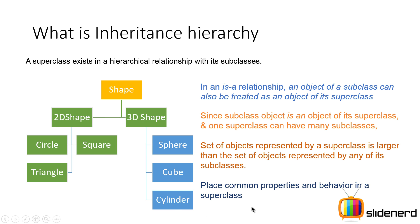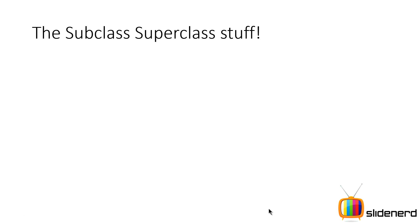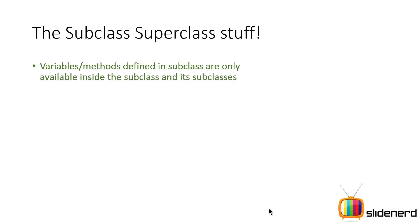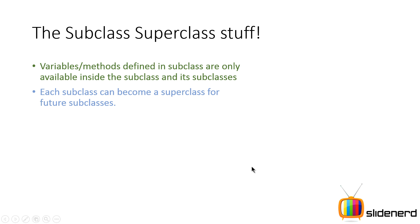Remember: place common properties and behavior inside the superclass and just add the specific ones inside the subclasses. We discussed this in the previous video — if you haven't seen it, please go back and check it out. Also, variables that are new and defined inside your subclass are accessible only inside that class and its subclasses. And remember, each subclass can also become a superclass for other subclasses — it's multilevel, like grandfather, father, and child.